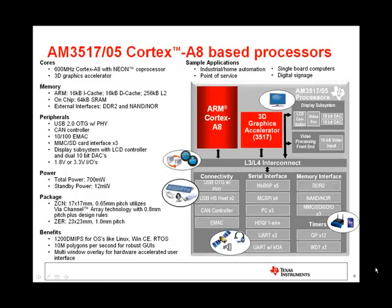The AM35X generation targets applications such as industrial automation and point-of-service, and was TI's first implementation of this core for the industrial space. The core runs up to 600 MHz and also has a 3D graphics accelerator. Differences from the previous generation include an additional PHY paired with the USB 2.0 OTG peripheral, a CAN controller on chip, and a 10/100 Ethernet MAC. The peripherals also support both 1.8 V and 3.3 V IO for additional flexibility. A 1 mm pitch package option is available for this device.